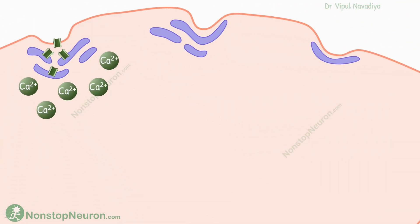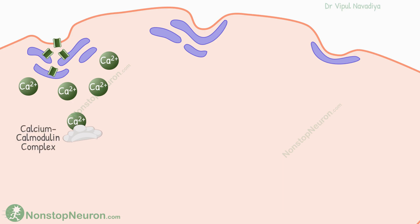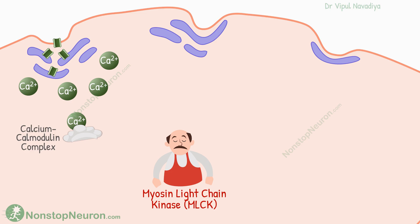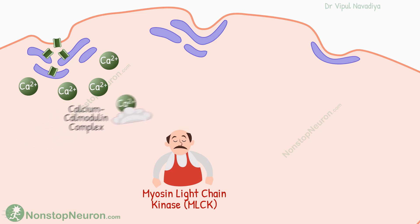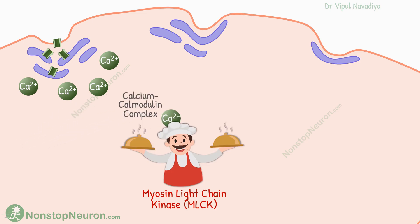Now moving towards the contraction part, the entry of calcium increases the calcium concentration inside the cell. Inside the cell, the calcium binds with a protein called calmodulin. The activity of this enzyme is modulated by calcium, hence the name calmodulin. And its complex with calcium is called the calcium-calmodulin complex.